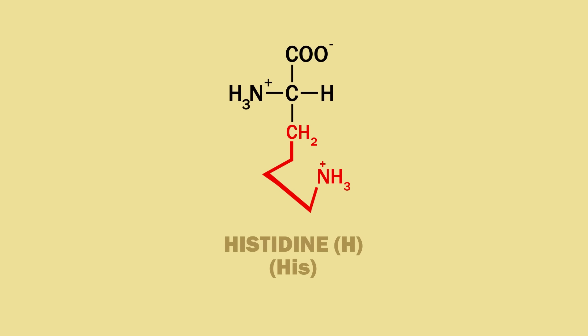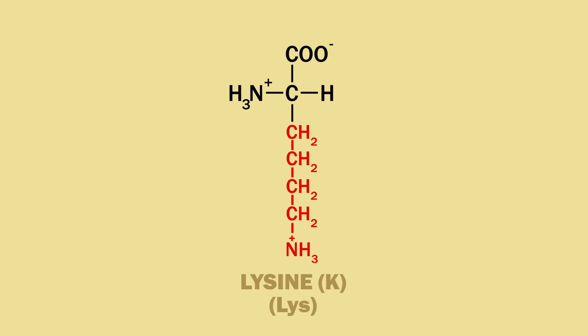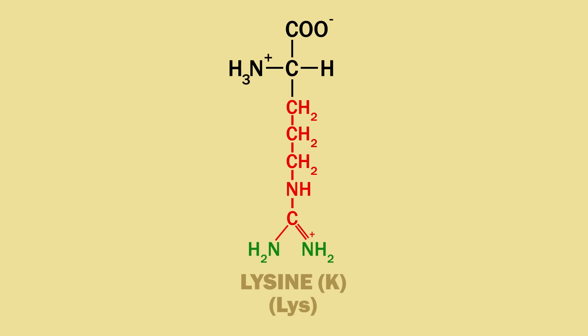Now let's change lysine to arginine. Switch the CH2 and NH3+. Erase the 3+ and the H2. Draw in two NH2s attached to the carbon. Since carbon makes four bonds, one of the nitrogens will have a double bond to the carbon. As a result, it will have a positive charge. And that's arginine.